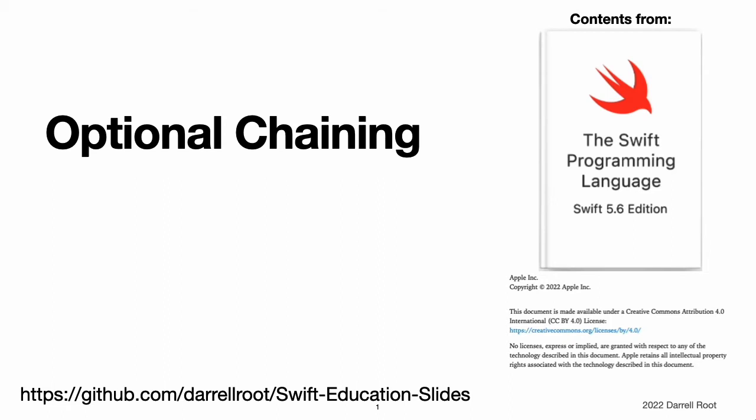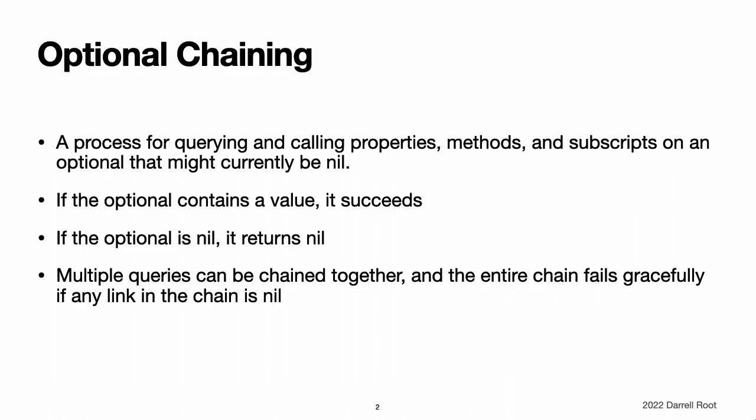Optional Chaining. Optional chaining is a process for querying and calling properties, methods, and subscripts on an optional that might currently be nil. If the optional contains a value, the property, method, or subscript call succeeds. If the optional is nil, the property, method, or subscript call returns nil. Multiple queries can be chained together, and the entire chain fails gracefully if any link in the chain is nil.